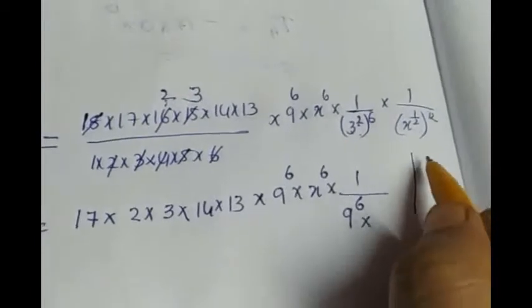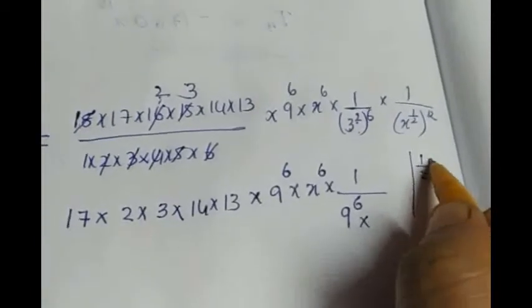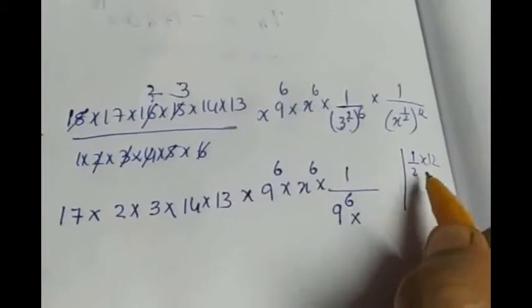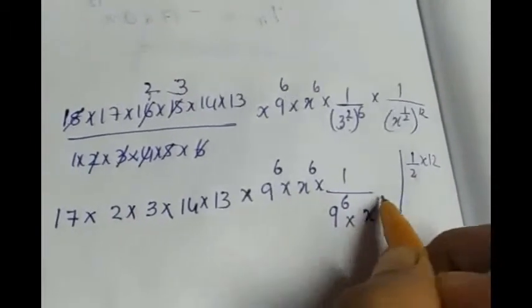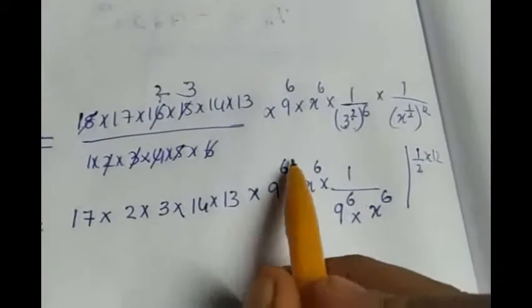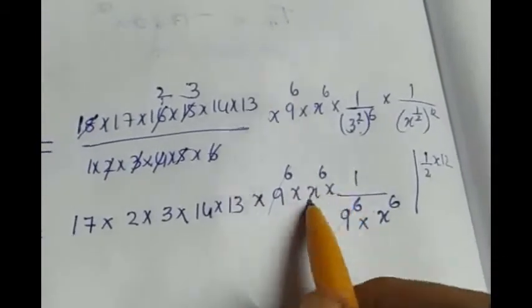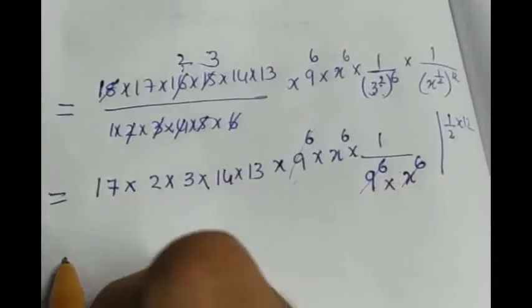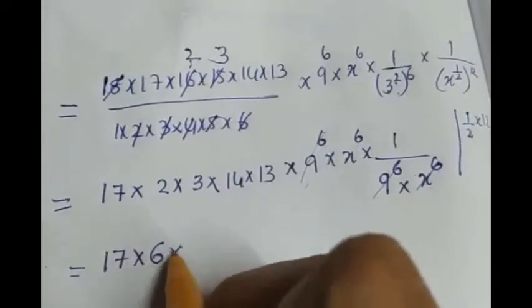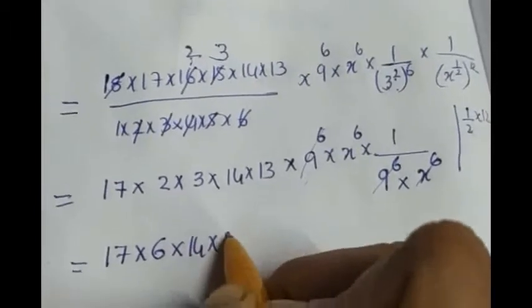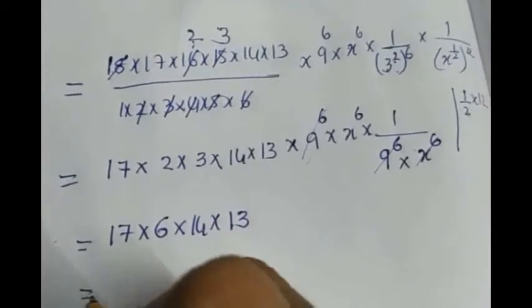Instead of (3^2)^6, I can rewrite it as 9^6 into here x^(1/2)^12. So I can multiply the power 1/2 into 12. 1/2 into 12 is half of 12 which is 6. So we are getting x^6. So what happens 9^6 gets cancelled. Same way x^6 gets cancelled.